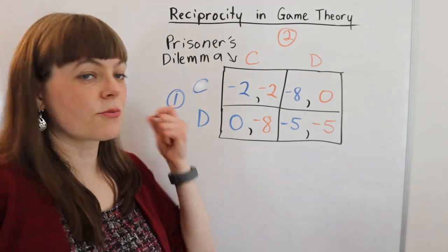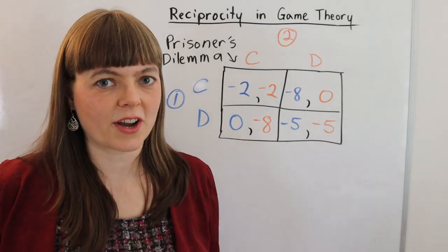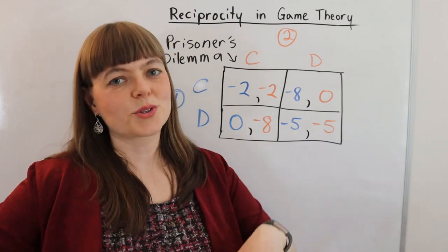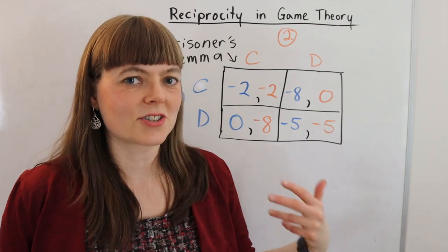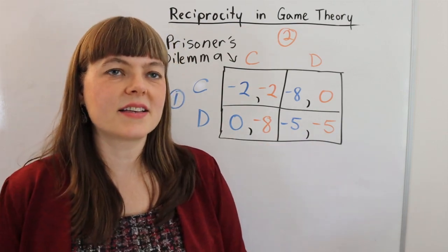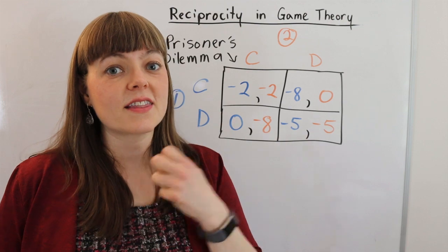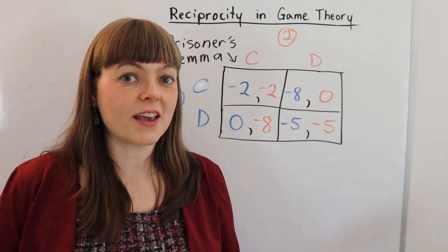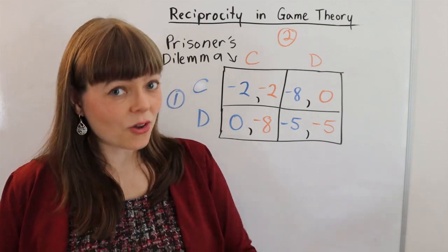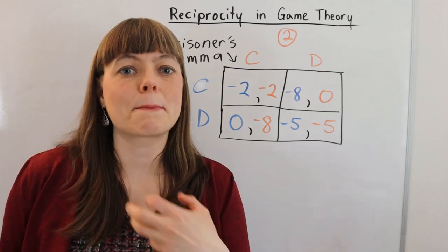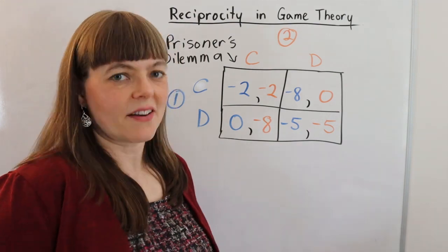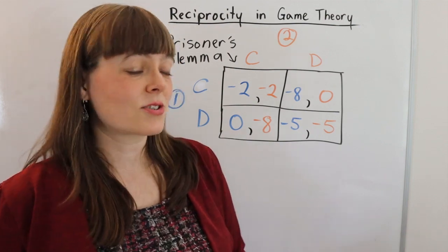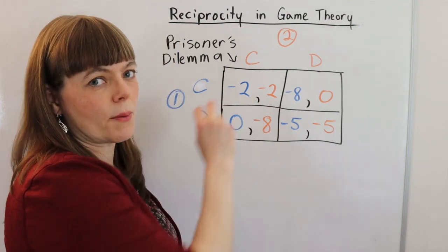In this video, I'm going to be talking about reciprocity in game theory. I have a whole other video on reciprocity in economics — you should watch that if you want to fully understand this. But the basic idea is that reciprocity is a natural instinct in people to have positive utility if you're nice to people who are nice to you, and also positive utility from being mean to people who are mean to you. This can help us predict why we have certain outcomes with the prisoner's dilemma that might actually sustain a cooperative equilibrium.